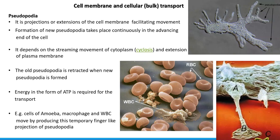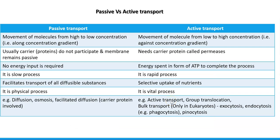Pseudopodia form temporary finger-like projections that help in capturing other organisms. For example, in amoeba, pseudopodia help in the formation of food vacuoles. Similarly, pseudopodial formation in WBCs helps in capturing pathogenic bacteria that may enter the bloodstream.